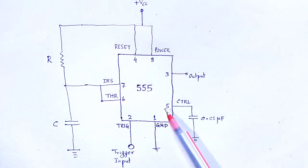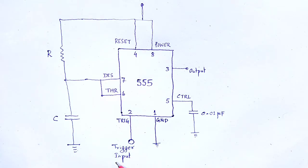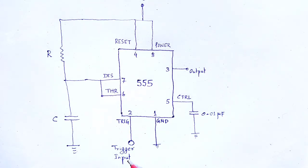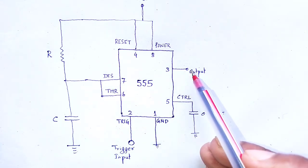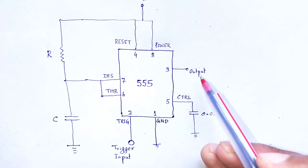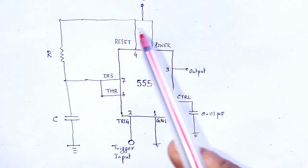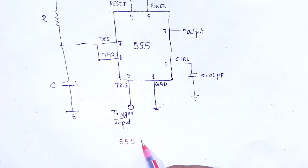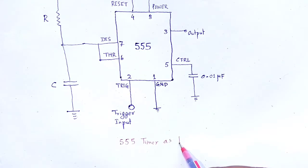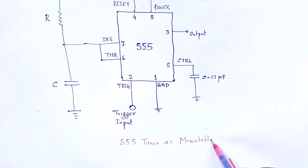It is important to note that the circuit requires an external trigger input for its operation. But in case of astable multivibrator, we cannot use a trigger; in case of monostable multivibrator, the trigger is essential. The trigger input is given at the trigger terminal at pin number 2, and the output of the oscillation is available at pin number 3 terminal. This is all about the circuitry of the 555 timer as monostable multivibrator.